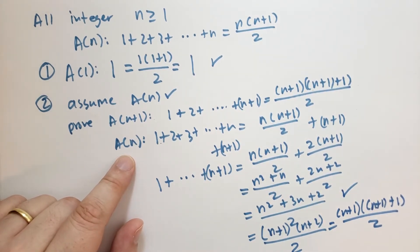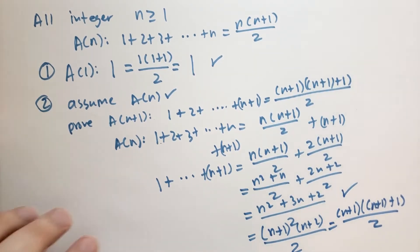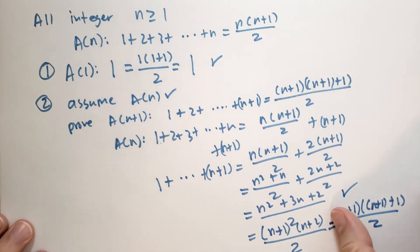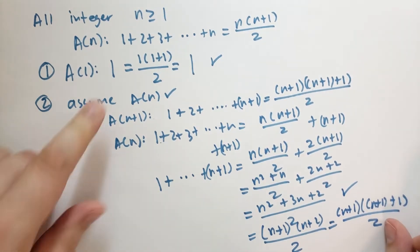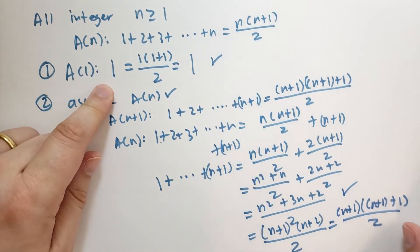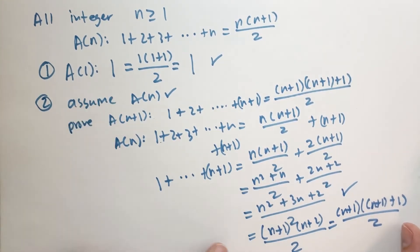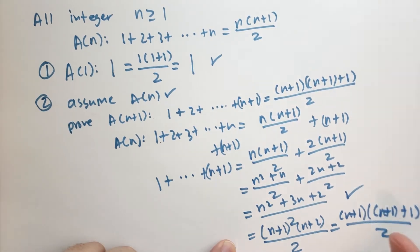So we have proven that A(n+1) is true if A(n) is true, and we're done. We proved that result by only proving those two things — one was really easy, the other just involved a little bit of algebra.